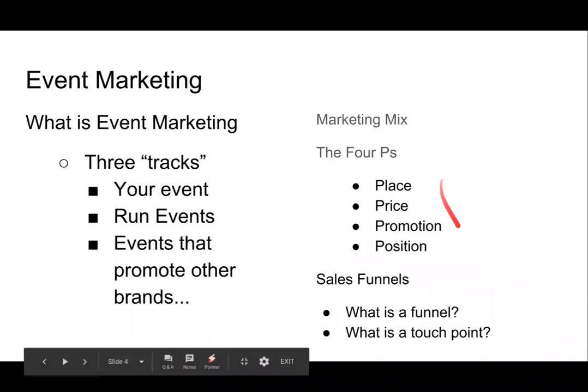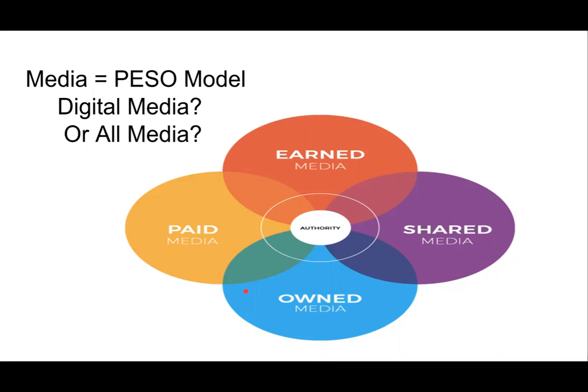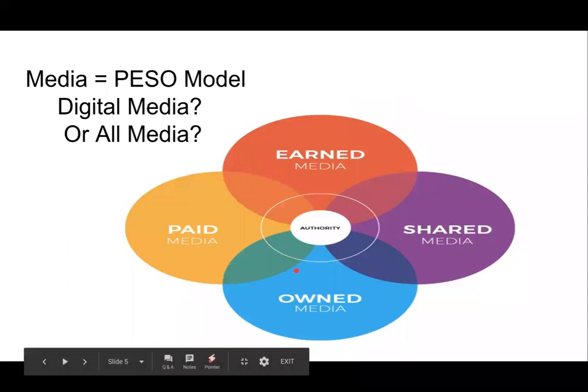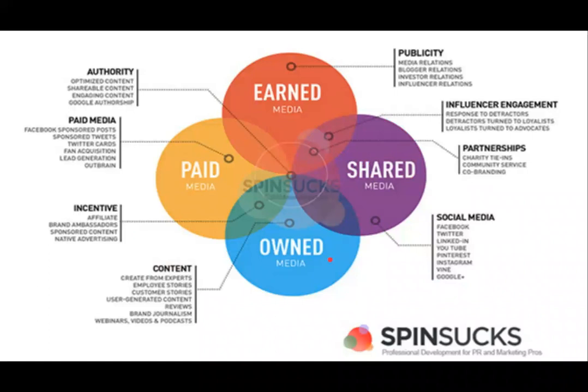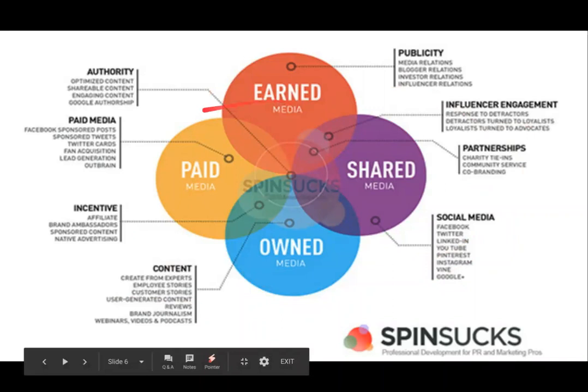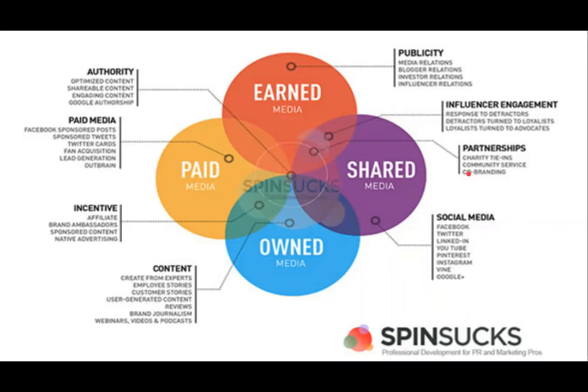As you're working on your four Ps — your position for yourself, your event, or the events you're using to promote other businesses — you're going to need to pick and choose from among the media. It's important to understand what each type is, in the same way you'd want to classify a plant on a nature walk. Is it a fruit tree? Is it an herb? Is it poisonous? The PESO model helps us think about media and gives us ideas of how to use all four types within our marketing mix — including TV, radio, and print.